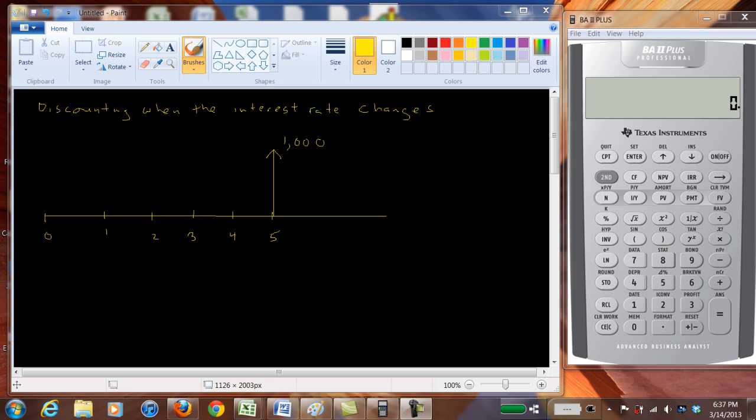I want to provide an example of how you find the present value if the interest rate changes during the time period you're discounting by.